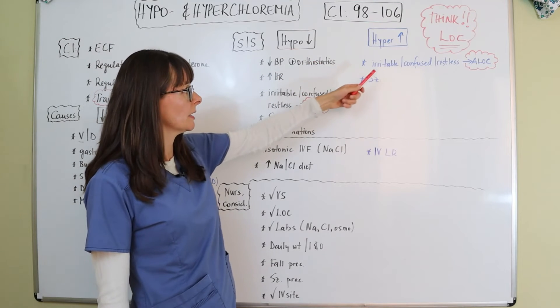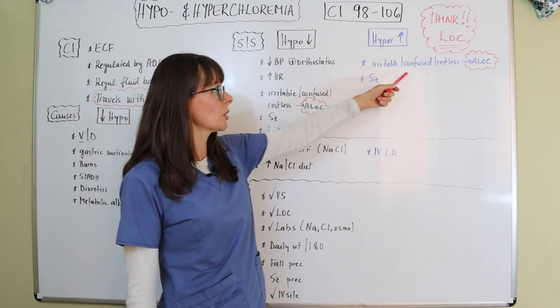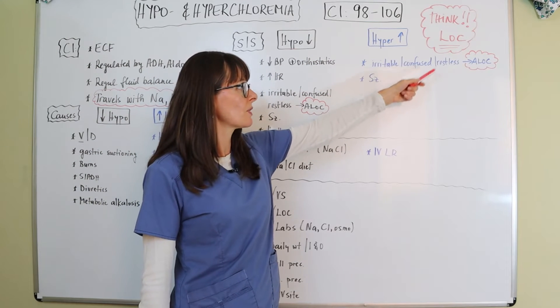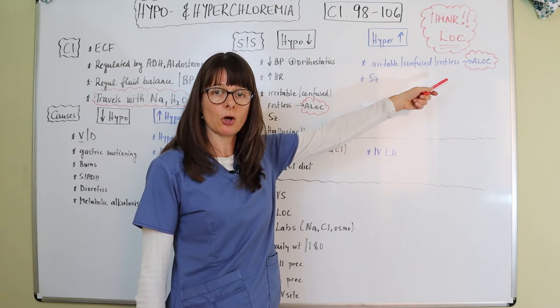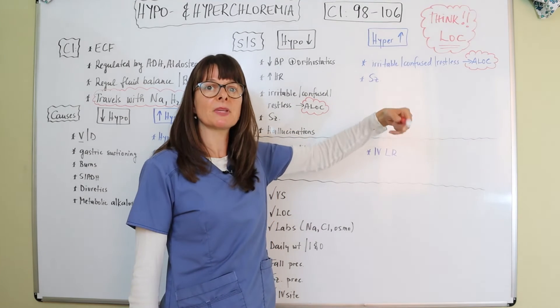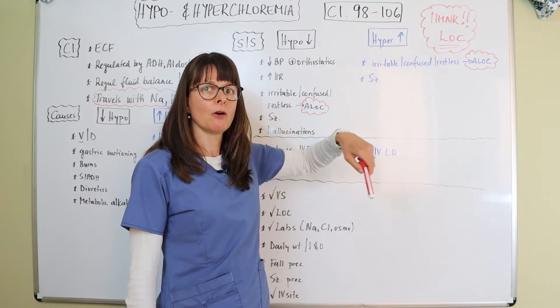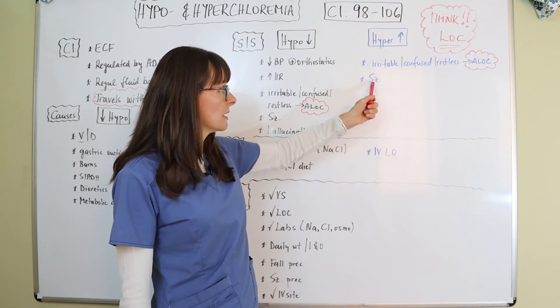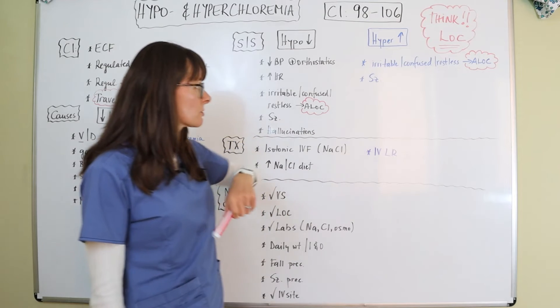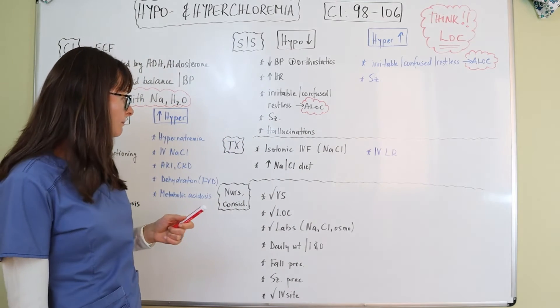For hyperchloremia, it's the same thing: irritability, confusion, restlessness, and altered level of consciousness. Something is different from their usual mental status, and it can also lead all the way to seizures.